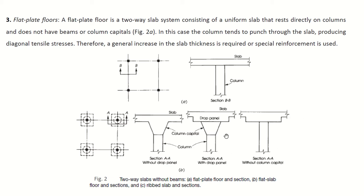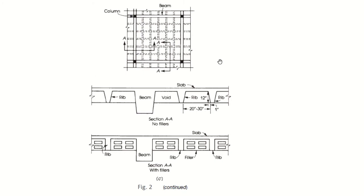A flat plate is a two-way slab system consisting of a uniform slab that rests directly on columns and does not have beams, column capitals, or drop panels. In this case the column also tends to punch through the slab, producing diagonal tensile stresses. Therefore, a general increase in slab thickness is required, or special reinforcement is used, or concealed beams may be provided in the slab.